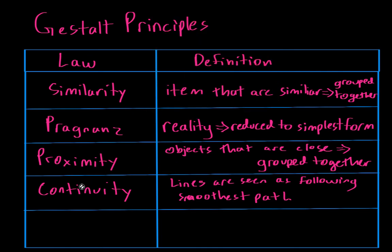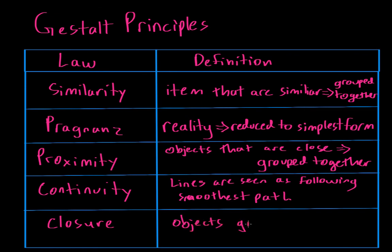The final Gestalt Principle is the law of closure. The law of closure basically says that objects grouped together are seen as a whole — we ignore gaps and complete contour lines.